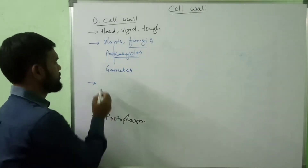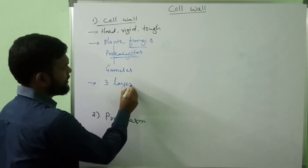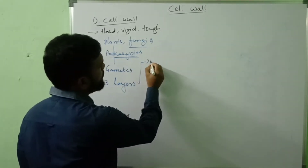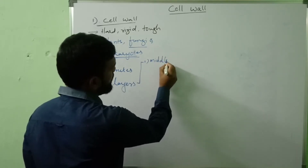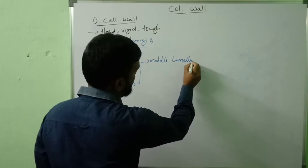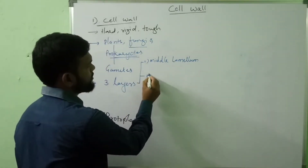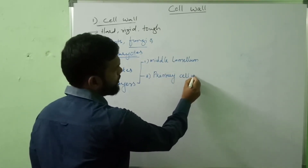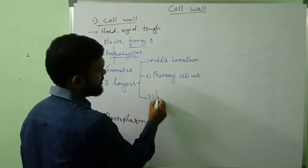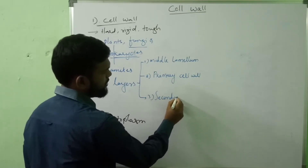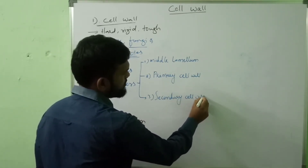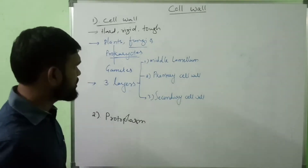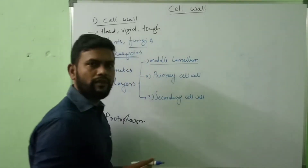In the cell wall, three layers are observed. Those three layers are: number one, middle lamella; second one is primary cell wall; and third one is secondary cell wall. These three layers are observed in a plant cell.